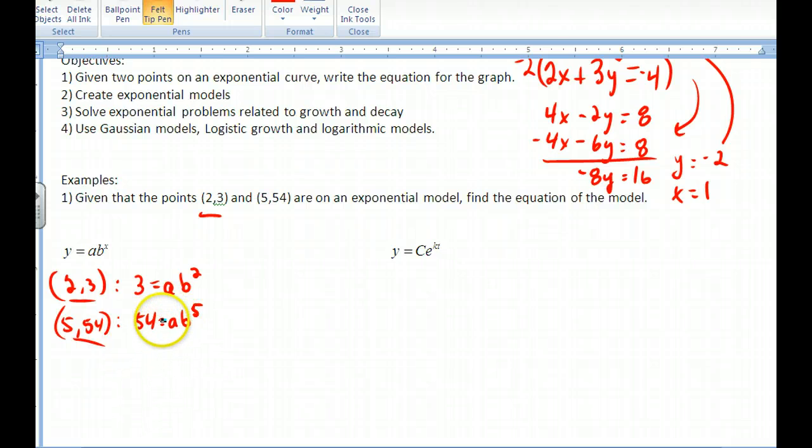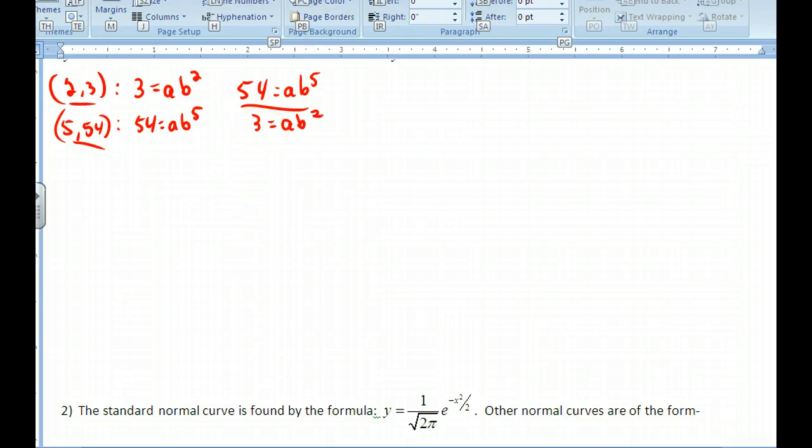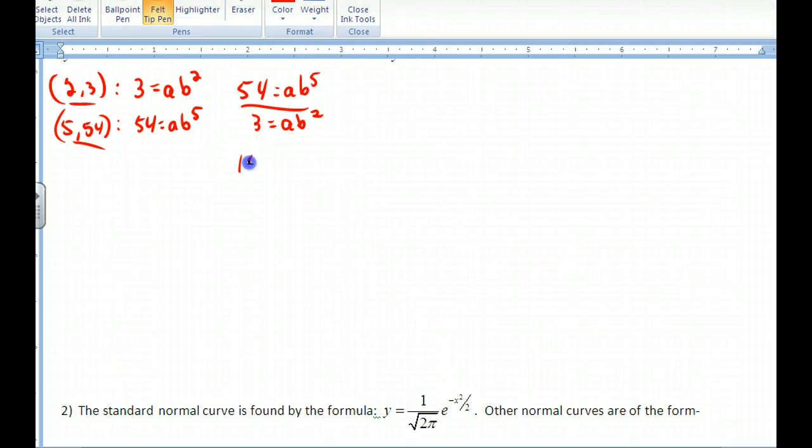Since these numbers are larger, I probably want to put those on top. If I divide these two, I just get 54 divided by 3, so that's 18. A divided by a, that's where we eliminate one of the variables. Then I do b^5 divided by b^2. We subtract the exponents, so you get b^3. So b equals the cube root of 18.